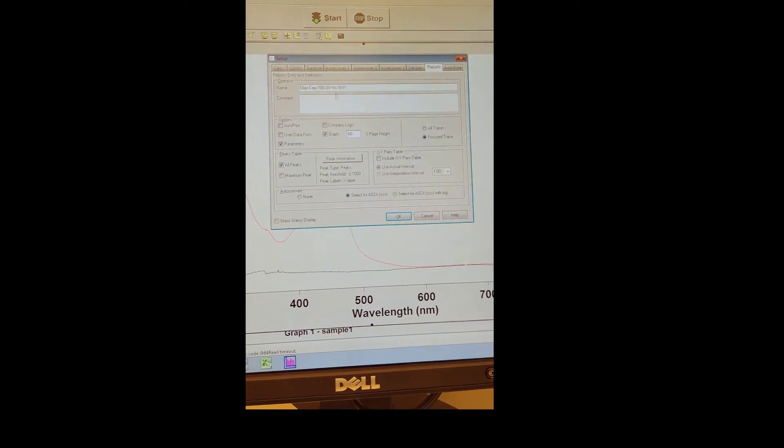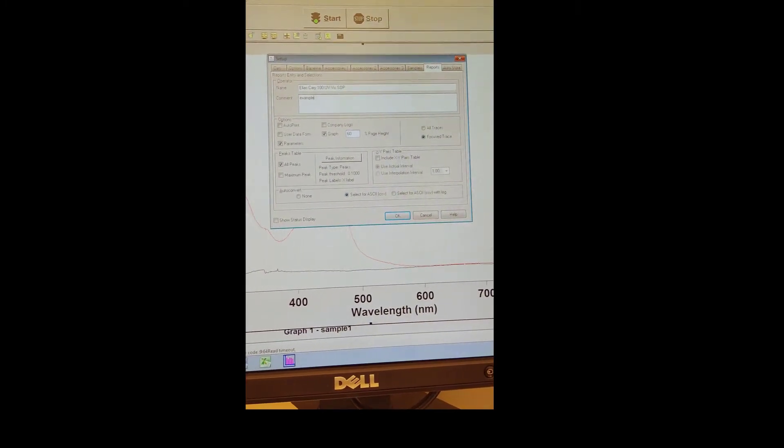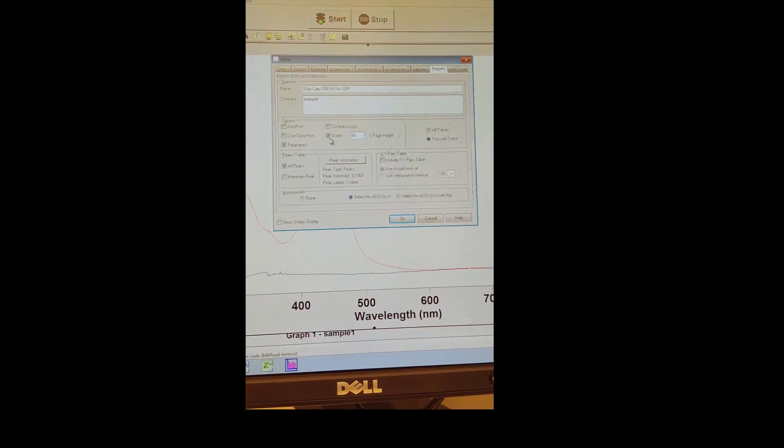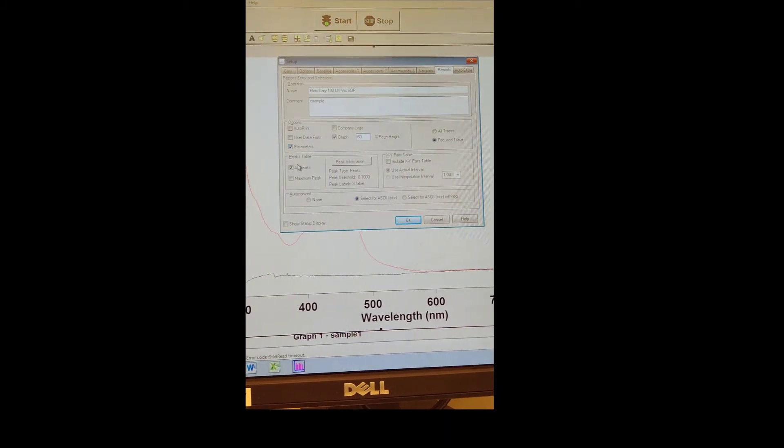Under Reports, give yourself a name as the operator. You can add a comment if you'd like. Under Options, I wouldn't really mess with that for now because I'm not printing out the spectrums today. If you were, I would change them as necessary.